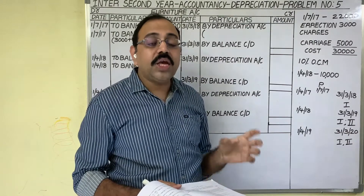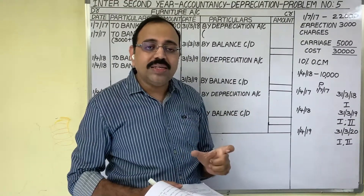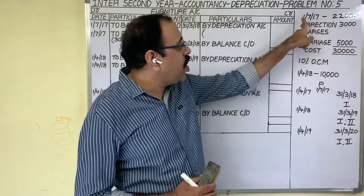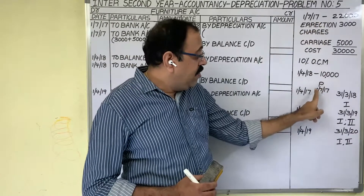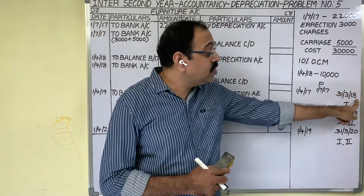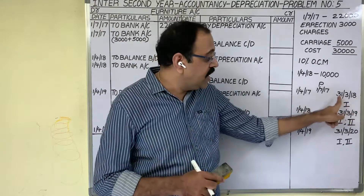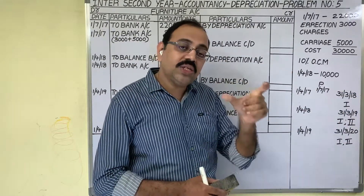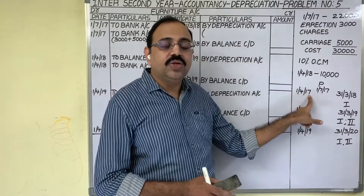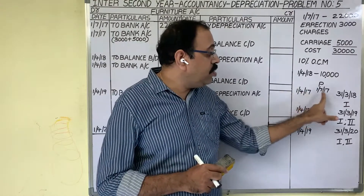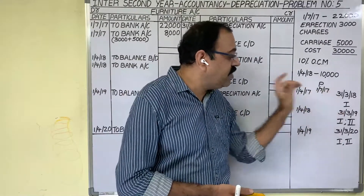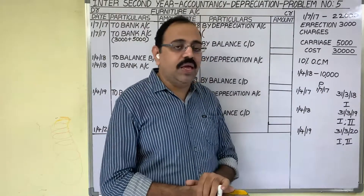Show the furniture account for three years, assuming that accounts are closed on 31st March every year. The firm is following the financial year. The first asset worth 30,000 was purchased on 1st July 2017. The next March falls in 2018, so the first year's last date is 31st March 2018. Counting back 12 months, the first year runs from 1st April 2017 to 31st March 2018. In this first year, they bought the asset on 1st July 2017.